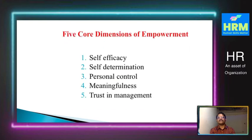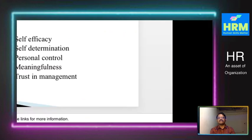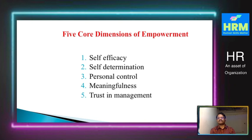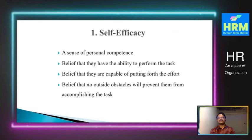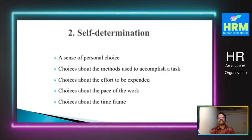Looking at the dimensions, there are five core dimensions of empowerment: self-efficacy, self-determination, personal control, meaningfulness, and trust in the management. From the employee side, self-efficacy — a sense of personal competency — is most important. When you are given more power and authority, you must exercise that authority very cautiously without any negative result. This means believing you have the ability to perform the task, believing you are capable of putting in the required effort, and believing that no outside obstacles will prevent you from accomplishing the task.